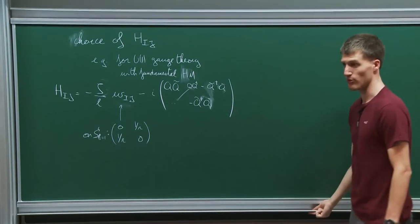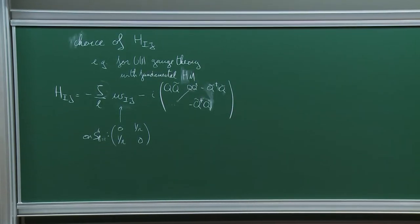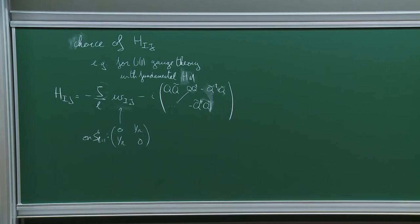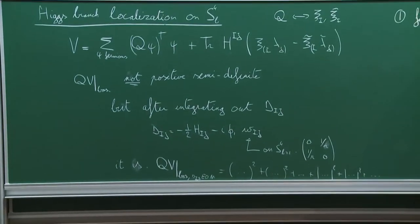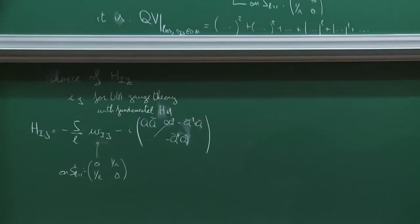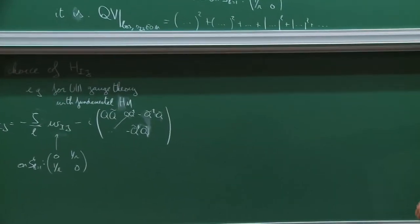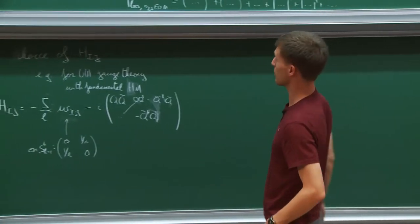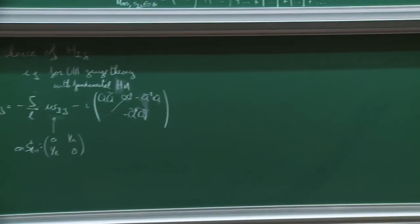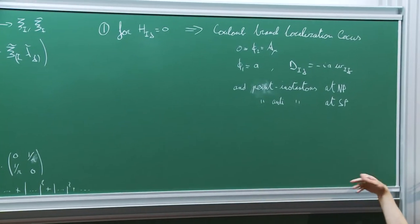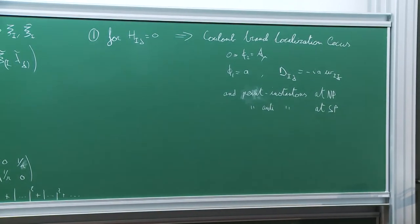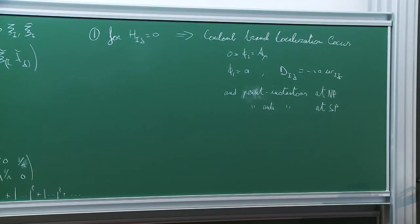For H_ij equal to zero — when this term is not turned on — we just have the old Coulomb branch localization locus, and the entire computation performed in the first two days goes through for that particular case.